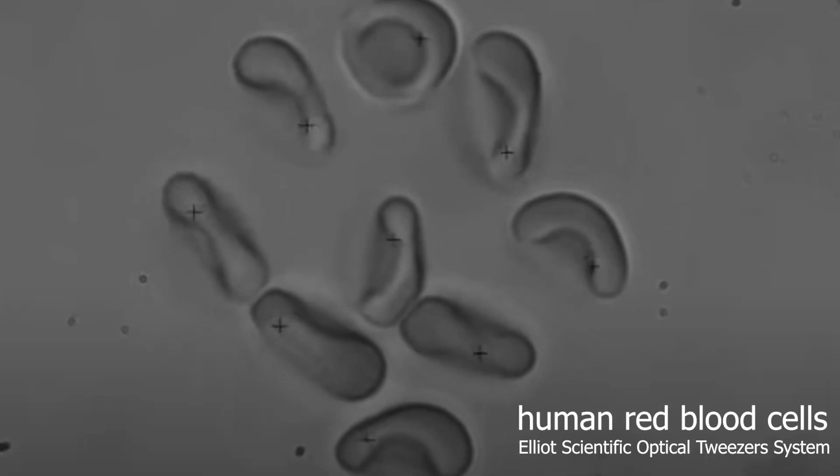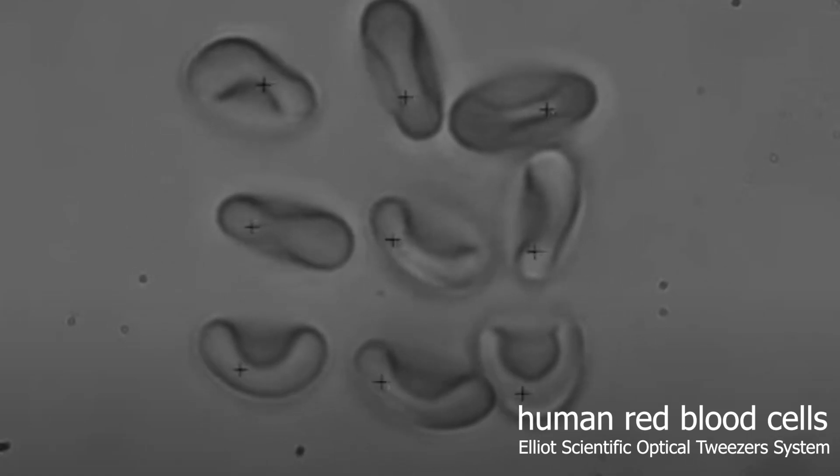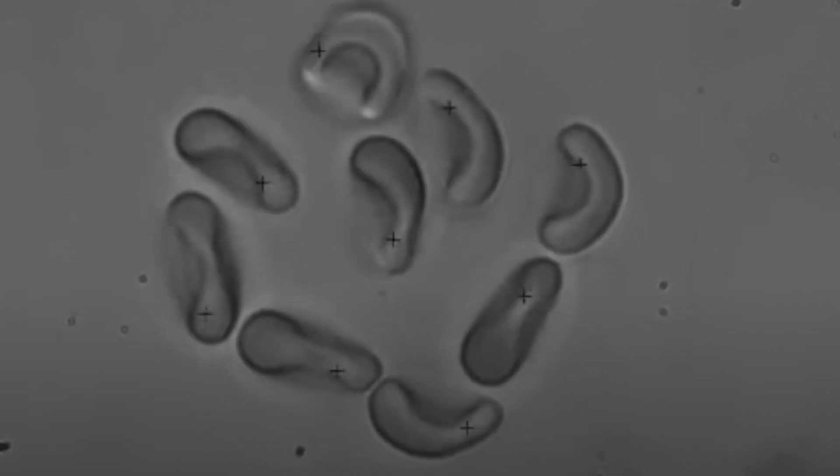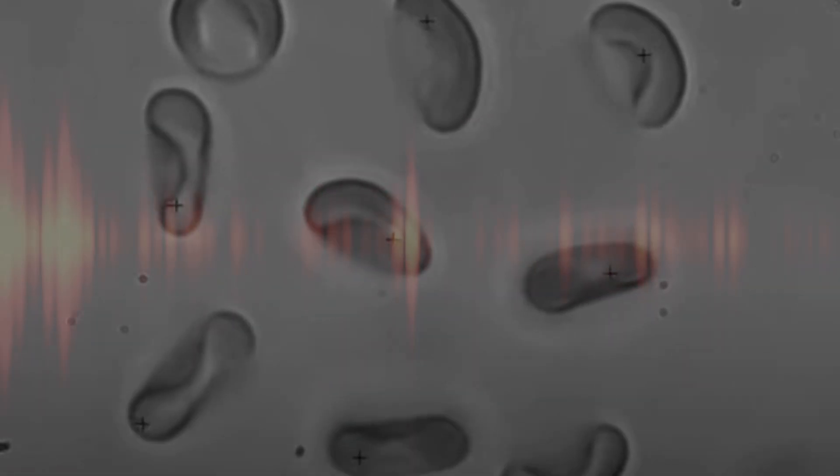With optical traps and optical tweezers, a beam of light can actually manipulate and arrange biological structures like human cells and bacteria without actually touching them. There's some confusion about how light can do this.